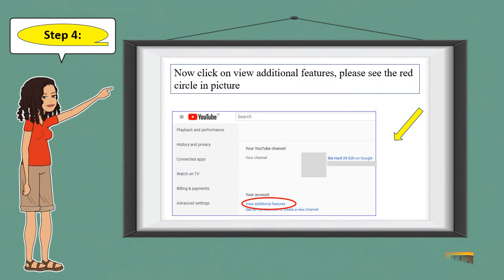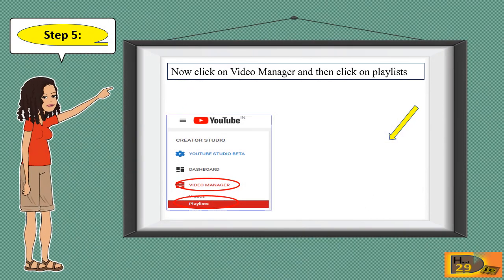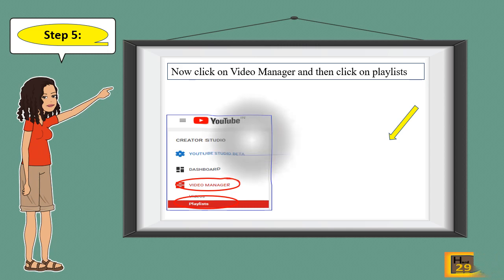Step 4: Now click on 'View additional features' — please see the red circle in the picture. Step 5: Click on Video Manager and then click on Playlists.